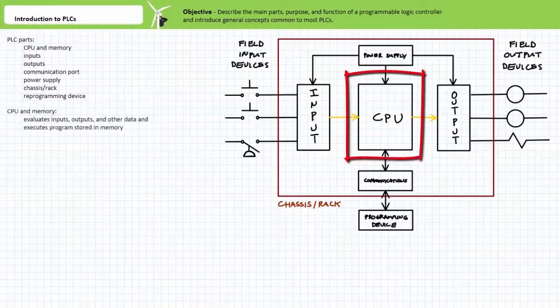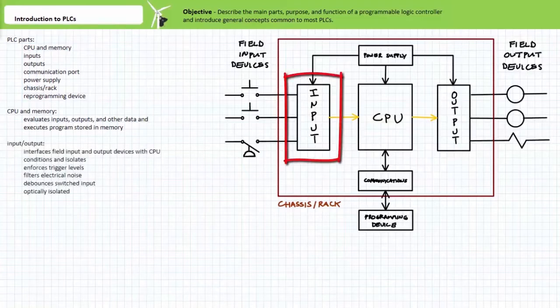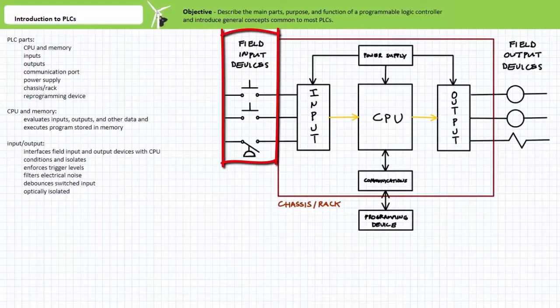The CPU is the brains or memory of the PLC and it is the portion that evaluates the state of the inputs, outputs, and other data and executes the program. The input is the interface between the PLC and remote or field input devices like switches or sensors. The input conditions and isolates the input signals from the internal and the output signals.